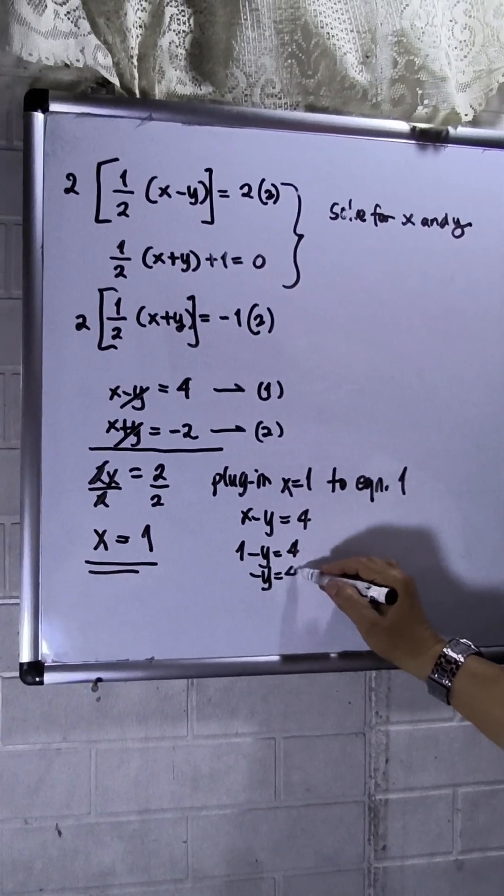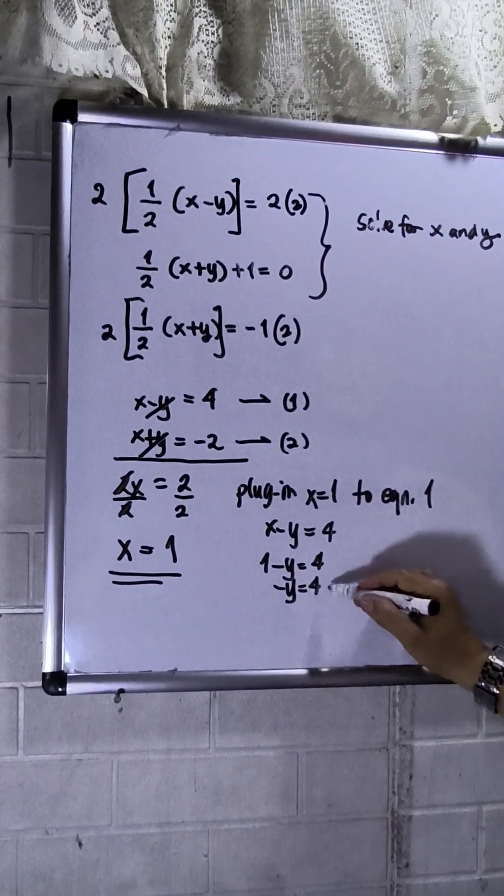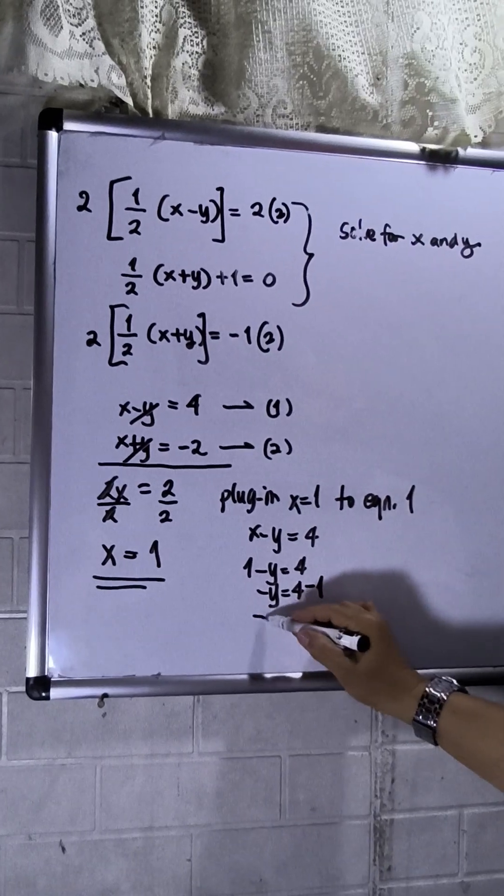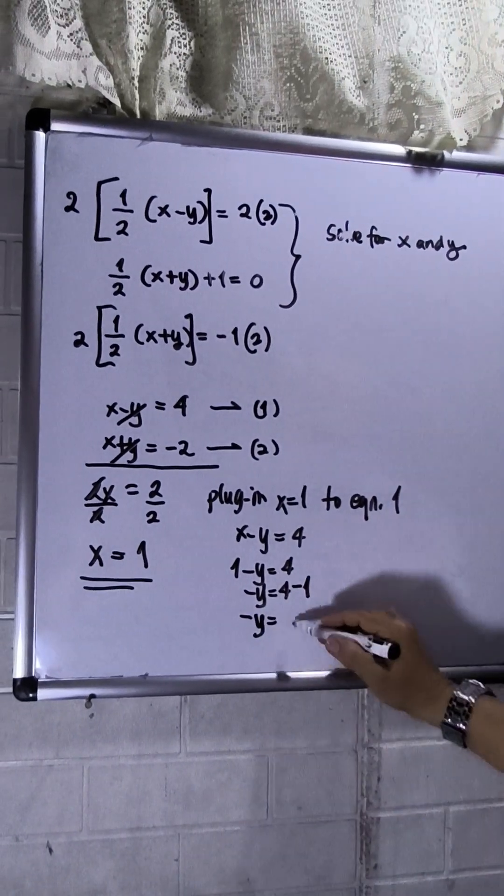Transpose 1 to the right. That will be negative 1. So negative y is equals to 3.